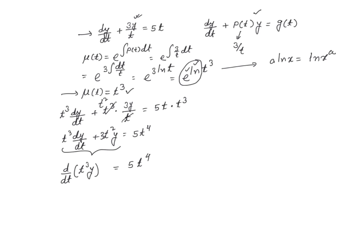At this point, we can take integral of both sides with respect to t. So now, left-hand side integration and derivative, they are going to take care of each other, leaving me with t³ y equals 5 times t to the power 4 plus 1, which is 5, divided by 4 plus 1, that is 5, plus some arbitrary constant c.